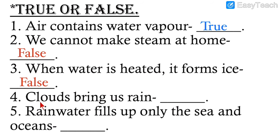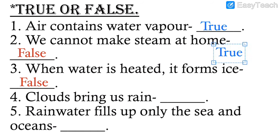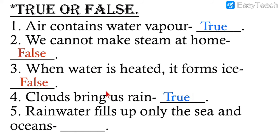Number four: Clouds bring us rain — yes, this is correct and true. Water vapor goes up and forms clouds; clouds bring rain. When clouds cannot hold water any longer, they throw it down on us — that is rain.